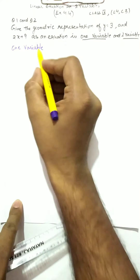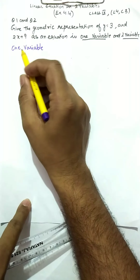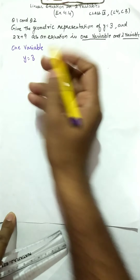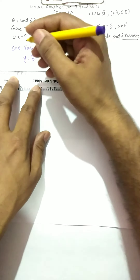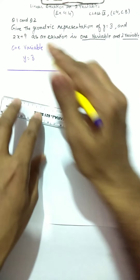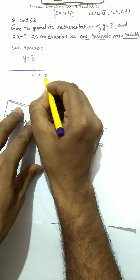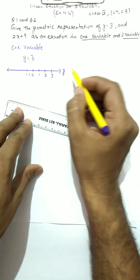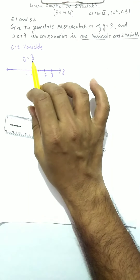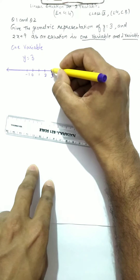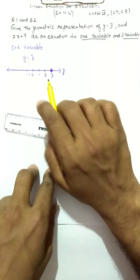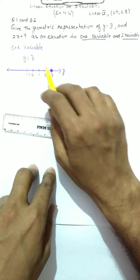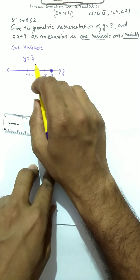When I say in one variable, I mean the number line, because the number line is always in one variable. To represent y = 3, I draw a number line: this is 0, 1, 2, 3, and minus 1. Put an arrow and write this as y. Your equation was y = 3, so y = 3 is this point. This filled circle is your representation of y = 3 in one variable.